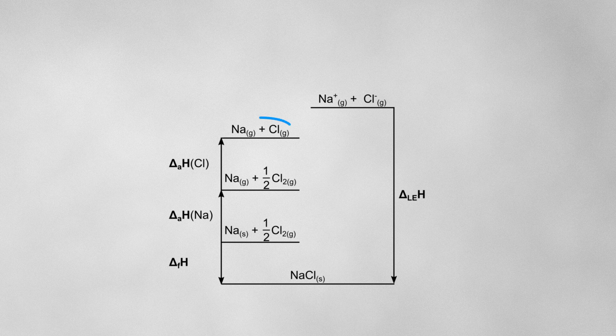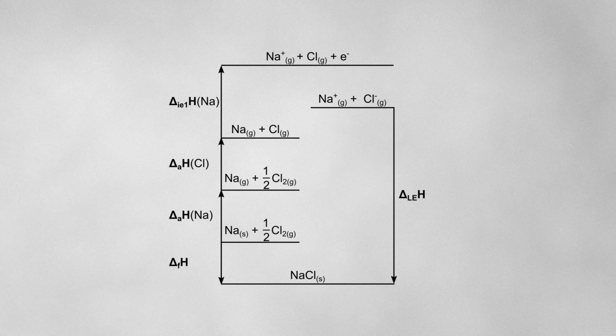Now we have gaseous atoms, but we'll need to convert them into gaseous ions. We can remove electrons from the sodium atoms to form sodium ions in a process described by the first ionization energy of sodium. The final step is to convert the chlorine atoms into chloride ions, a process described by the first electron affinity for chlorine. Now we have a complete Born-Haber cycle.